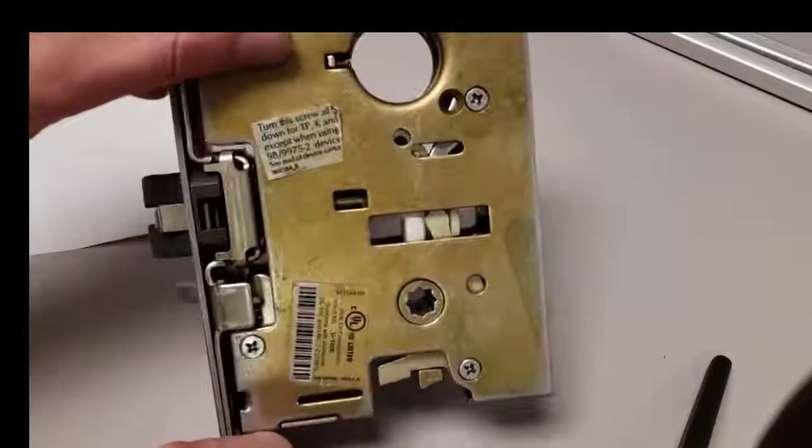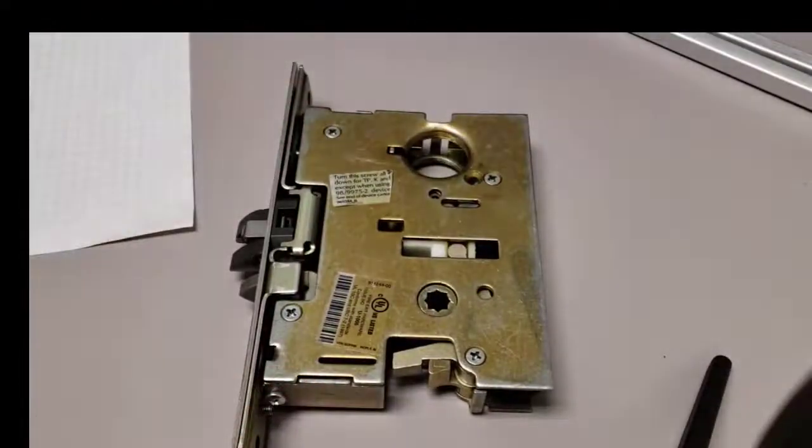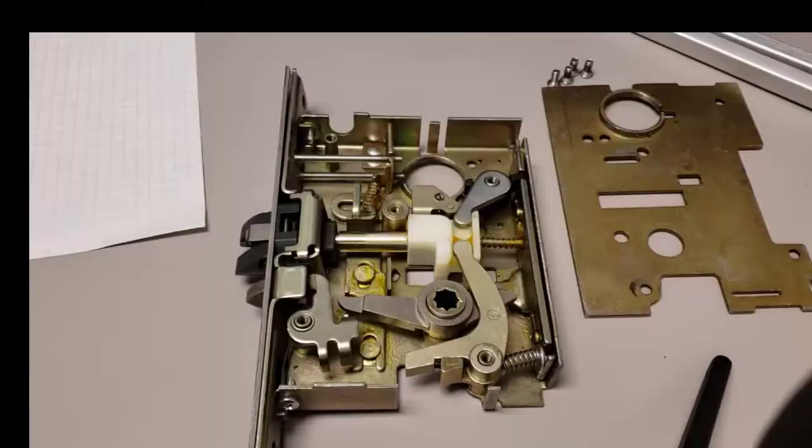Once the function screw is threaded down it is no longer visible in the hole and that's how you know you have changed the function. I will open up the mortise case so you can see and have a better view.